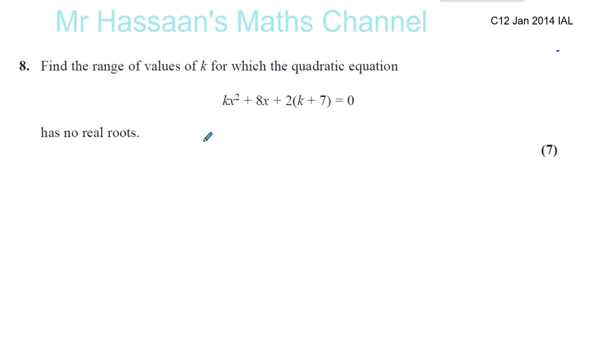A quadratic equation is in the form ax squared plus bx plus c equals 0, where a, b, and c are constants. So the k here and the k, they're constants.